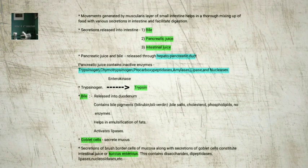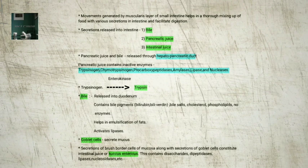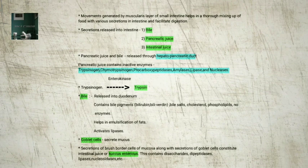Movements generated by the muscularis layer of the small intestine help in thorough mixing of food with the various secretions in the intestine and thereby facilitate digestion. The secretions released into the small intestine are: 1. Bile. 2. Pancreatic juice. 3. Intestinal juice. Pancreatic juice and bile are released through the hepatopancreatic duct. The pancreatic juice contains inactive enzymes: trypsinogen, chymotrypsinogen, procarboxypeptidases, amylases, lipases, and nucleases.